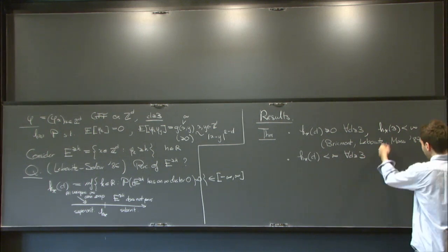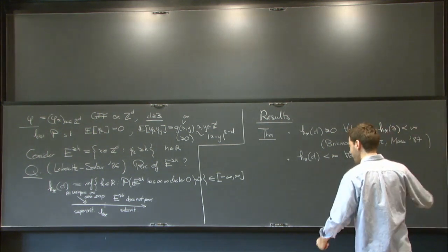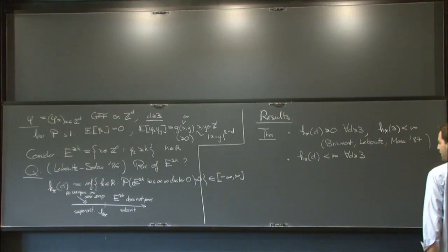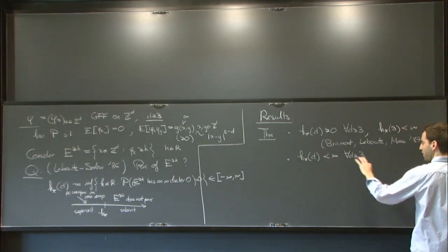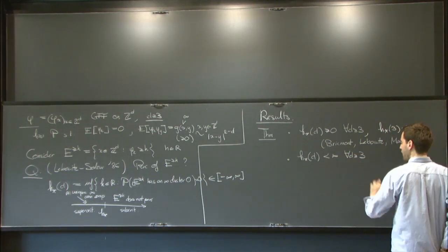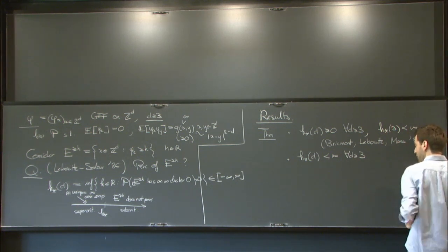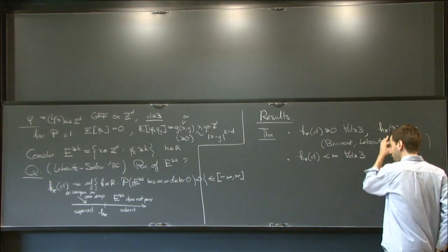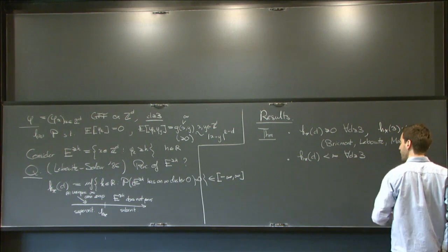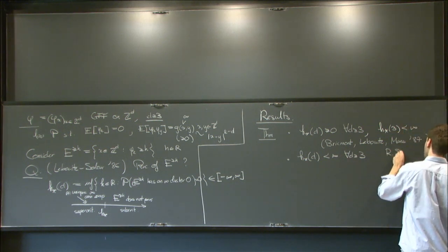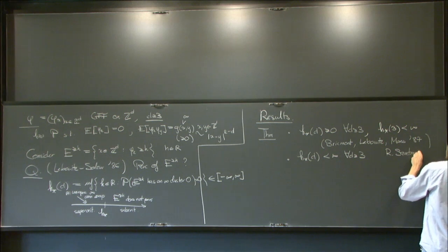More recently, with Snitman, we completed this picture by proving that h* is indeed finite for all dimensions greater or equal to 3. There is a problem in the argument because in higher dimensions a random walk would not hit every infinite set — particularly not necessarily another random walk. So this was a problem, and we complemented their results. This was when I started my PhD thesis.